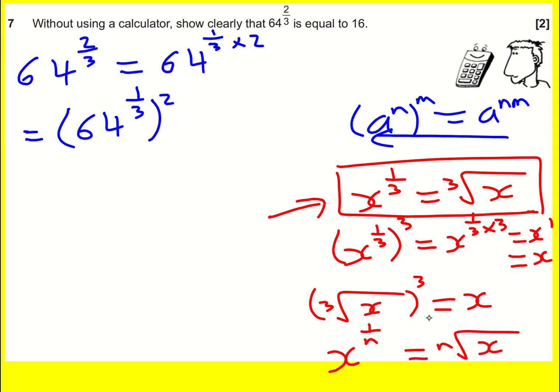So what does that mean? That means I can now write down that I've got 64, the cube root. Okay, I'm going to treat this as a non-calculator question.